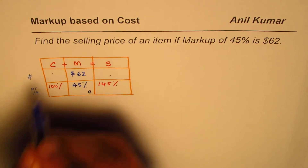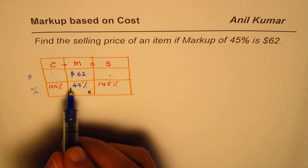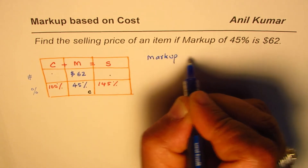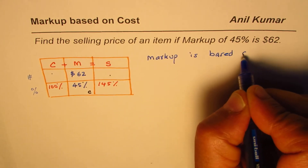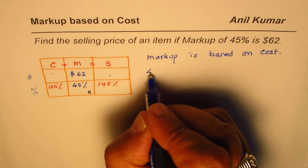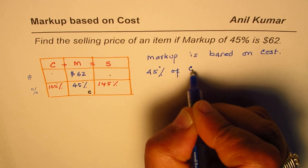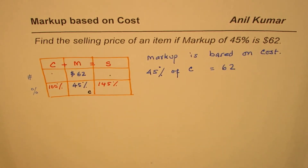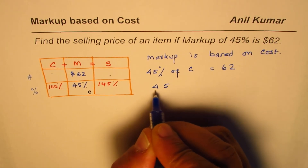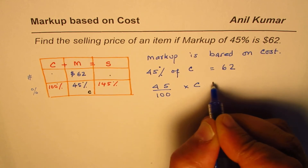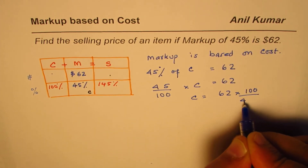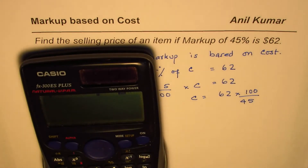We know markup is based on the cost price, so let's say the cost price is C. Then 45% of C equals $62. When we say 'of' we mean times, so 45 over 100 times C equals 62, which means C equals 62 times 100 over 45.